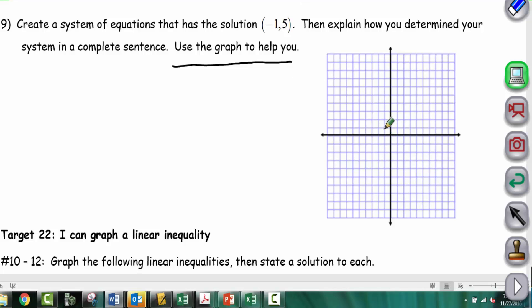The solution is always the intersection of two lines. So at (-1, 5)—that's negative 1, then up 1, 2, 3, 4, 5—that's our point. All we need to do is draw two lines that intersect there. Here's one line, and here's the other line.